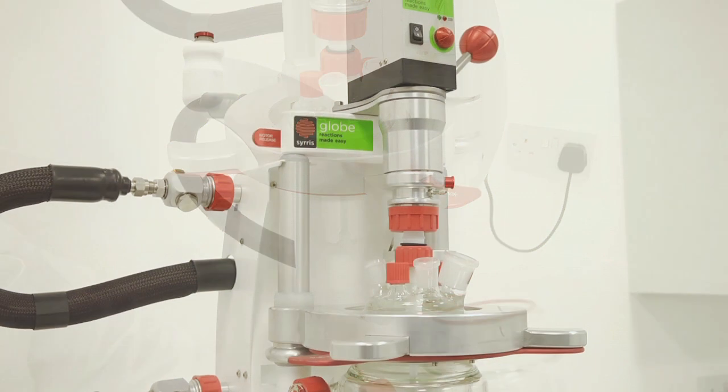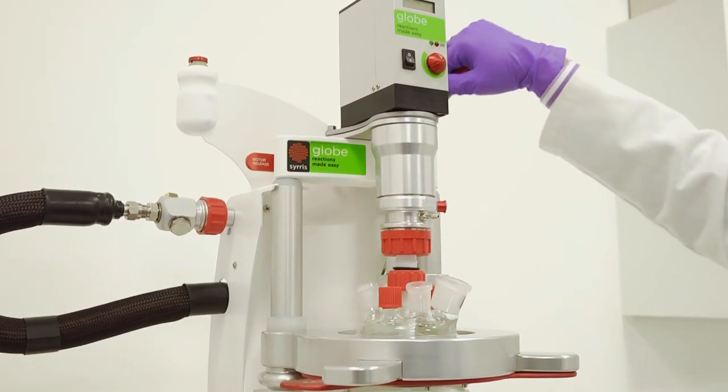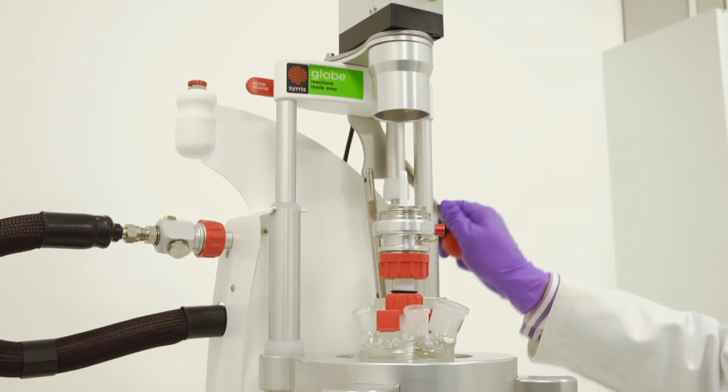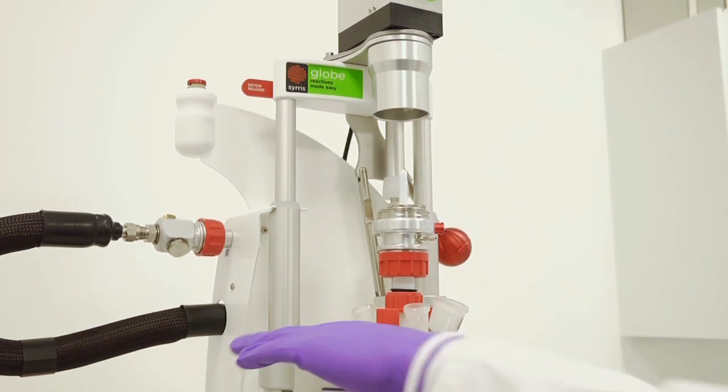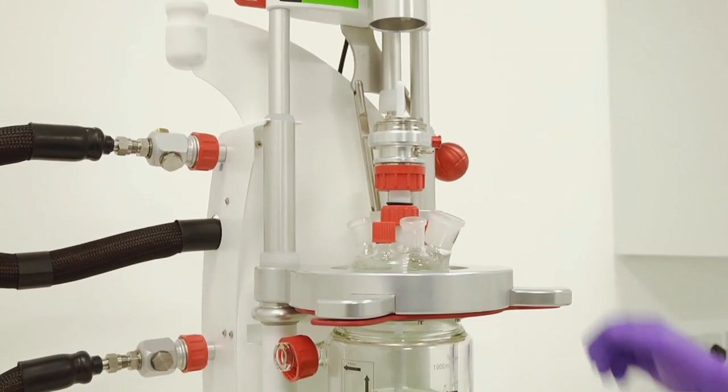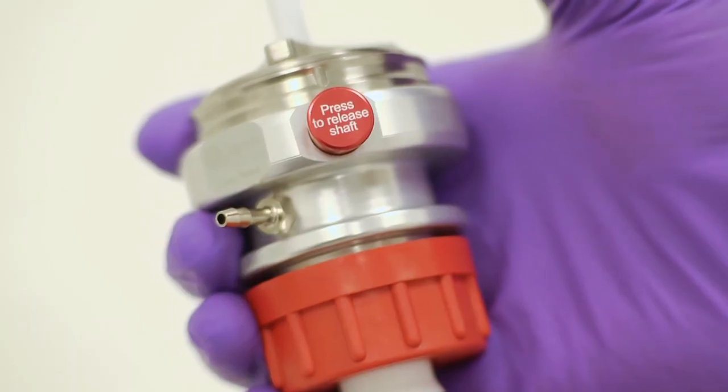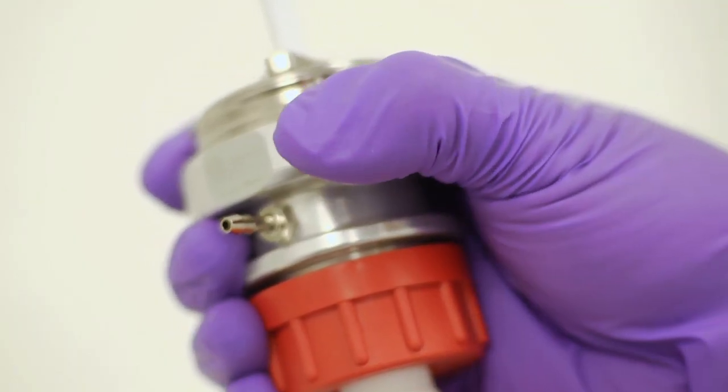GLOBE has an easy to raise motor and auto-aligning stirrer. Pull the GLOBE handle to raise the stirrer motor away from the stirrer seal and guide. A button on the stirrer seal and guide allows instant stirrer height adjustment.